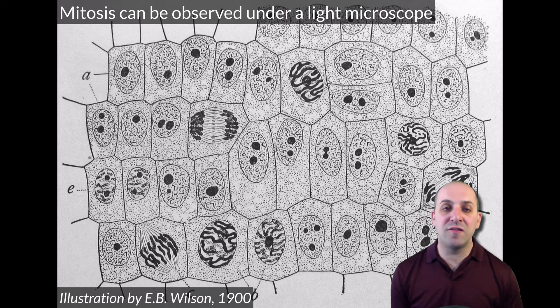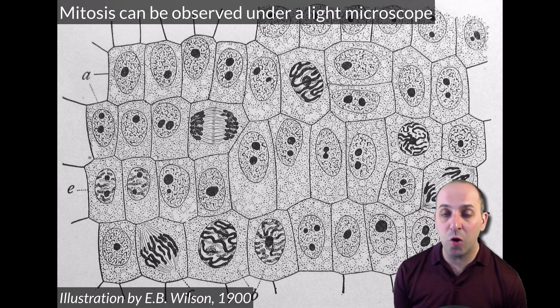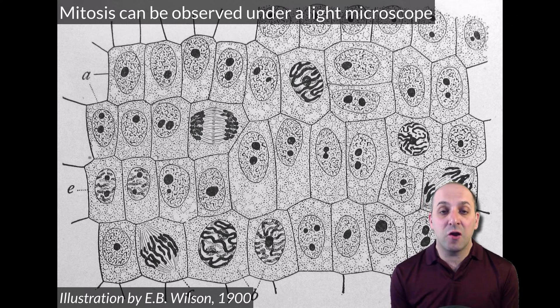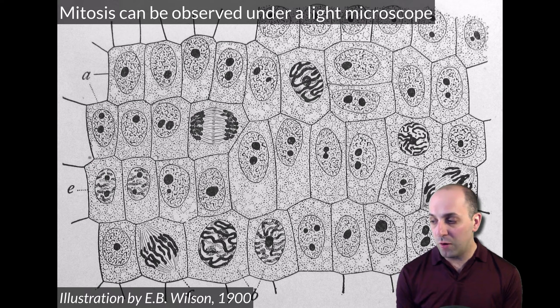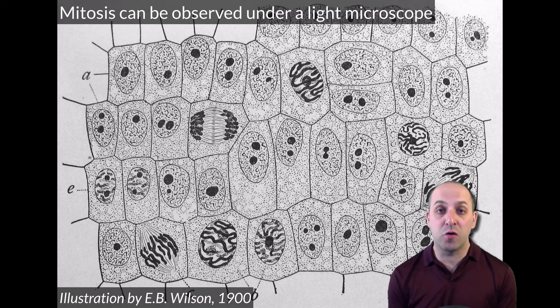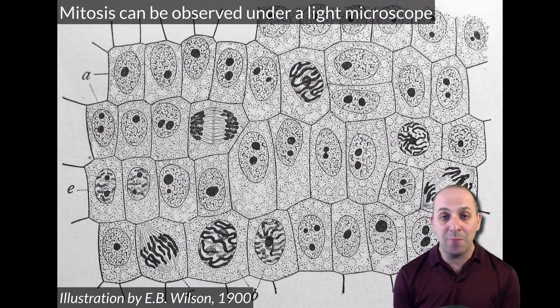The process of mitosis can actually be observed under a light microscope, and as a result, it was one of the first cellular processes that was observed. This illustration is from 1900. During mitosis, chromosomes are visible, and it's the fact that you could see chromosomes under a light microscope which actually gave rise to their name.